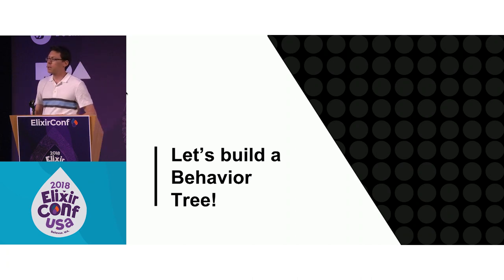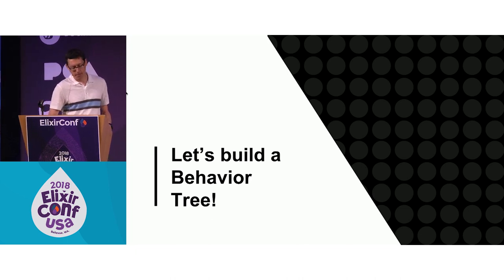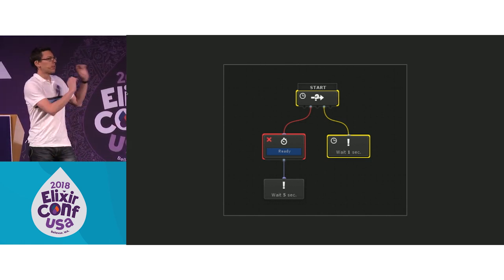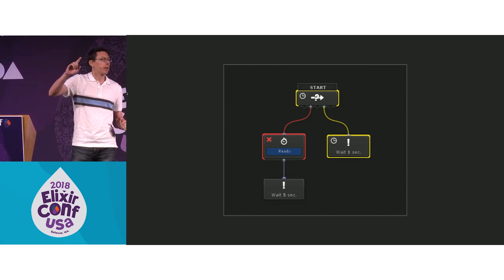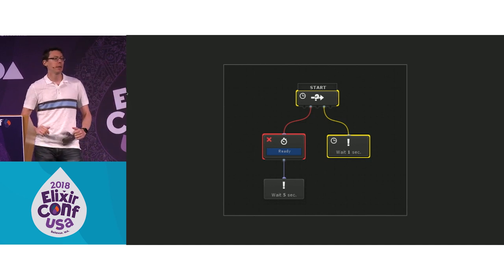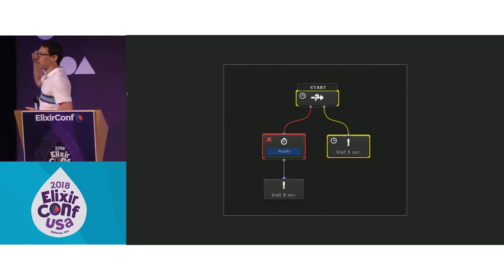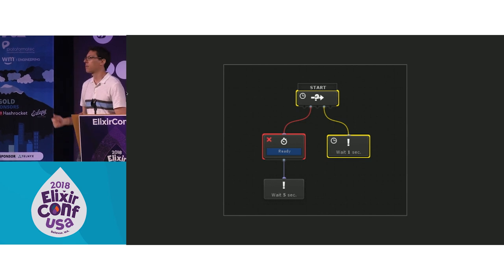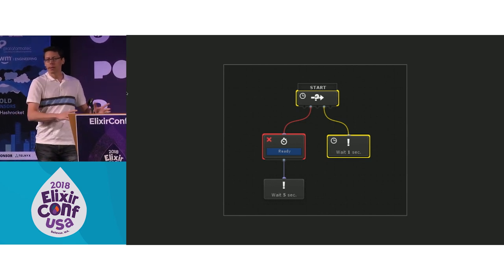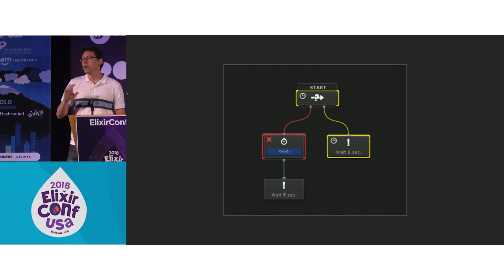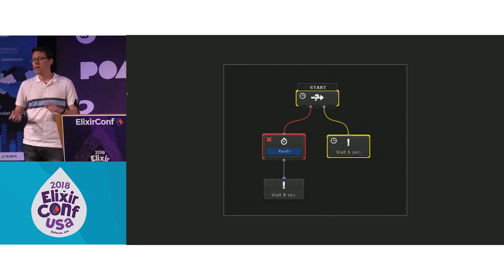Now that you know the idea behind behavior trees, let's talk about how we would build one. Each node in a behavior tree has a state, and you start by walking through the whole tree and setting everything to ready. Then you begin at the top, work your way down to a leaf, setting each node to a running state as you go. When you reach a leaf, you run it. Meanwhile, you go back up to the top and work your way down again following running nodes — 60 times a second. At some point the leaf fails or succeeds, setting its state from running to either failed or succeeded, and you move on to the next node based on the control nodes.